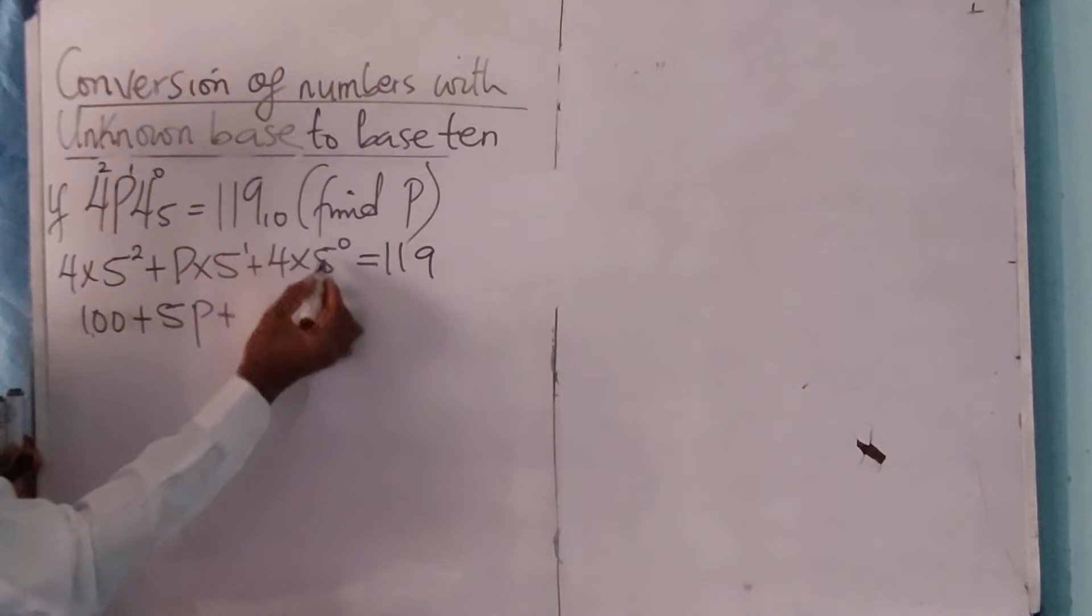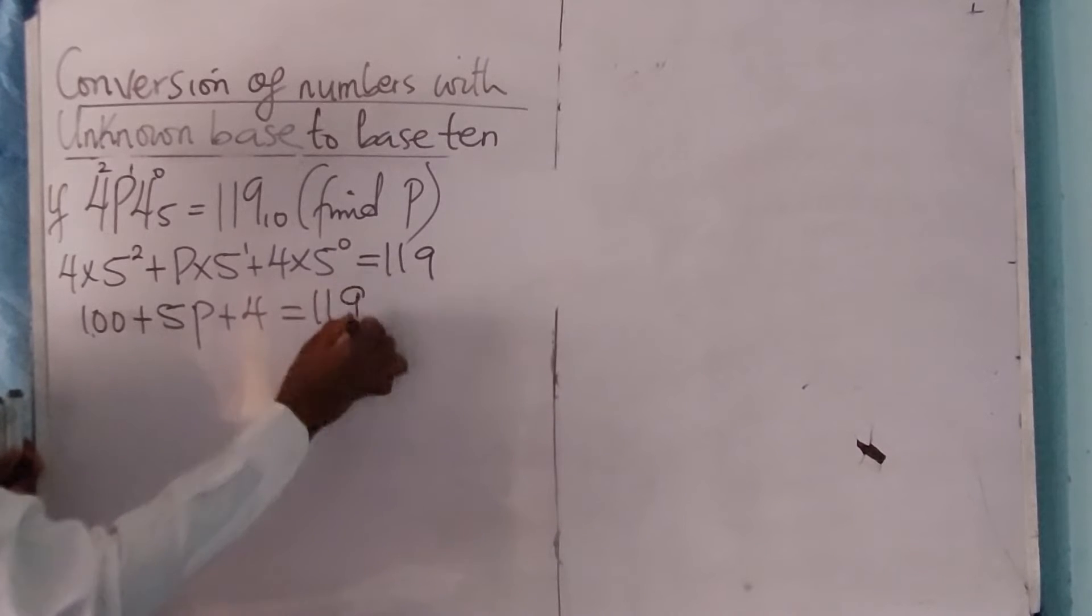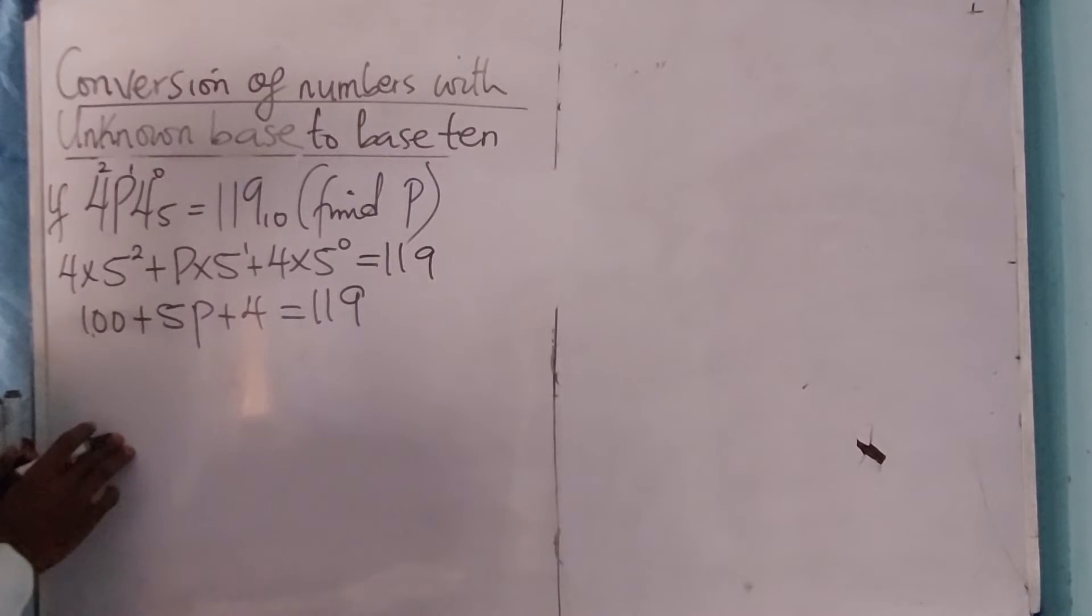Then for the indices, everything raised to power 0 is 1, so 4 times 1 is 4, equals 119. Okay, so which means that...